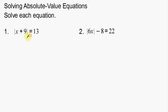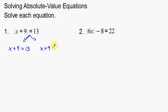What we're going to do is rewrite this equation twice. The first time, we're going to rewrite it as we see it, except without the absolute value symbols — so x plus 9 is equal to 13. The second one, we rewrite the left side without absolute values, but the right side we change to negative 13. So: x plus 9 equals 13, and x plus 9 equals negative 13.